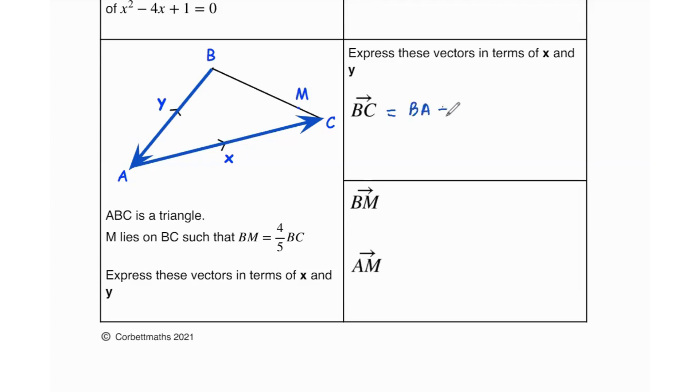BA is going to be negative y because AB was positive y, so when you change the direction the sign changes. So now BA is negative y, and direction of AC is the same so that's going to be positive x. So negative y plus x is BC. Now BM is 4 fifths of BC, so that's going to be 4 fifths of x minus y.